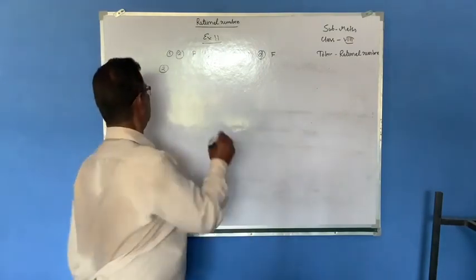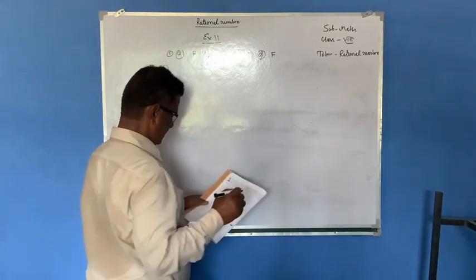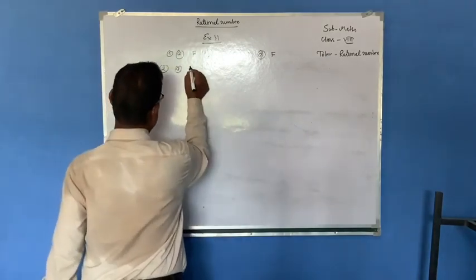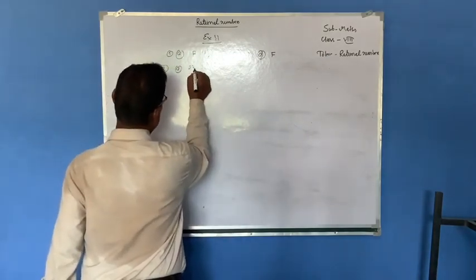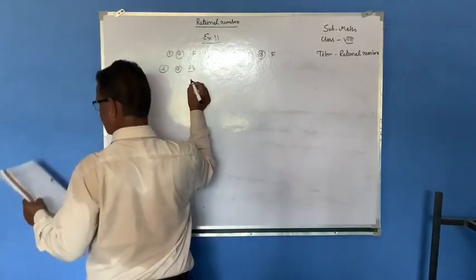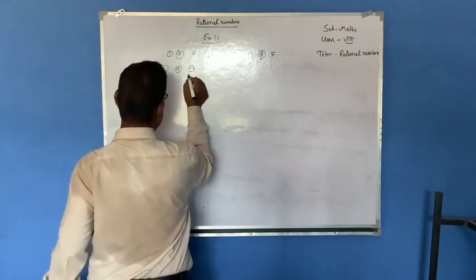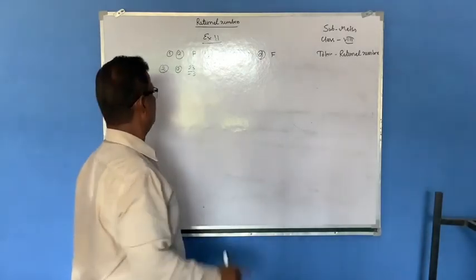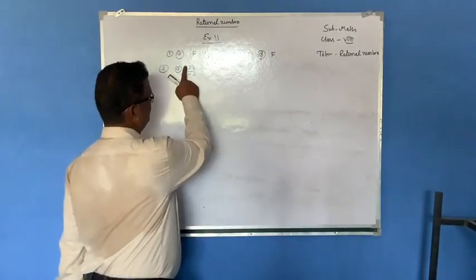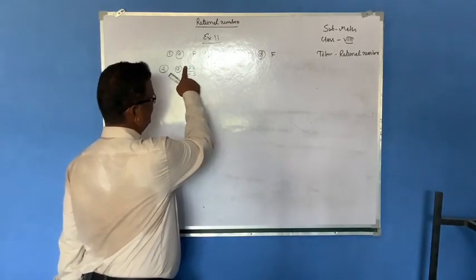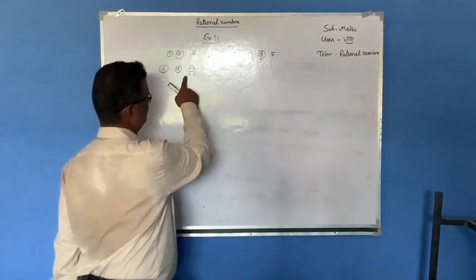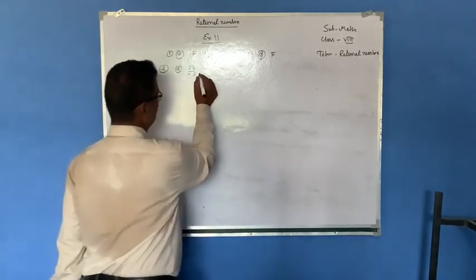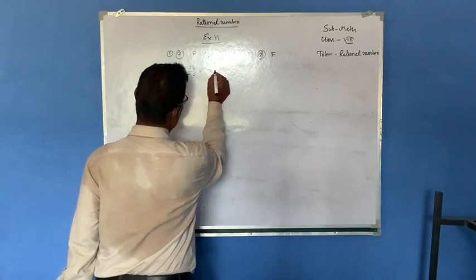A given: 23 by minus 5. Here the denominator is negative. So this is a negative rational number.